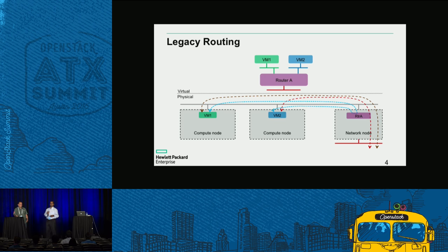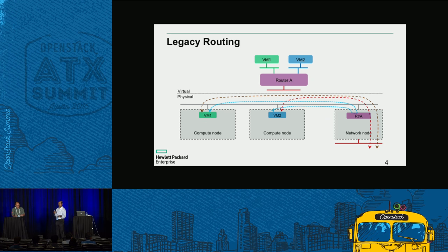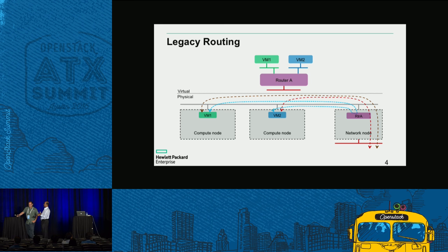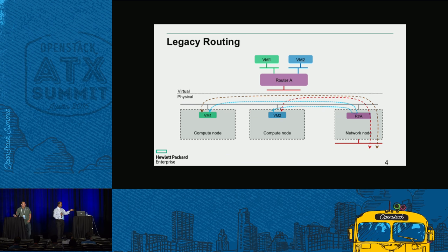Neutron has a legacy routing capability. The router is created in a network node. If a VM on compute node A wants to talk to a VM on compute node B and they are on different networks, the traffic has to always go through the network node to get routed. This is also true for VMs on the same host — traffic still goes all the way to the network node and back.